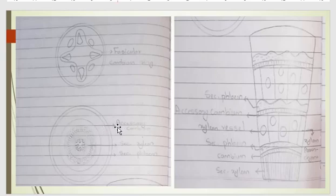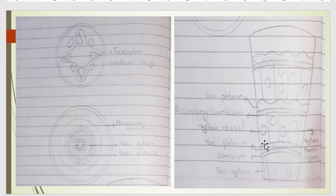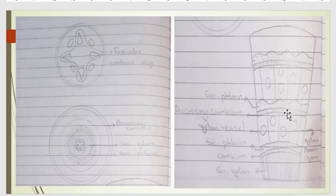In this figure we can clearly see that there is the cambium, and on the inner side there is the secondary phloem. After the secondary phloem there are vessels and parenchyma cells formed due to the accessory cambium. This accessory cambium develops and on the inner side there is the formation of xylem cells and xylem parenchyma.